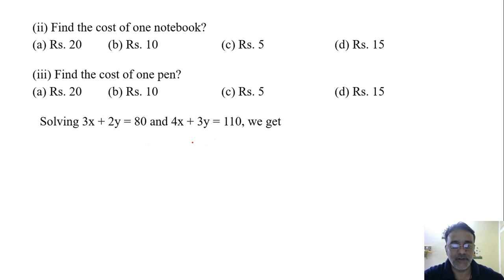Solving these two equations. What we are going to get. Isko ikkaam karte hai humlok into 3 kar lete hai. Aur isko into 2. So 9X plus 6Y is equals to 240. What is the second equation. We have to subtract. If you subtract these two will be cancelled.